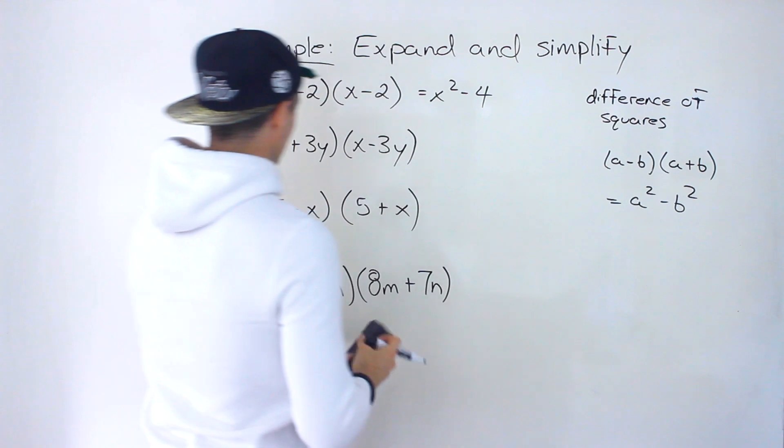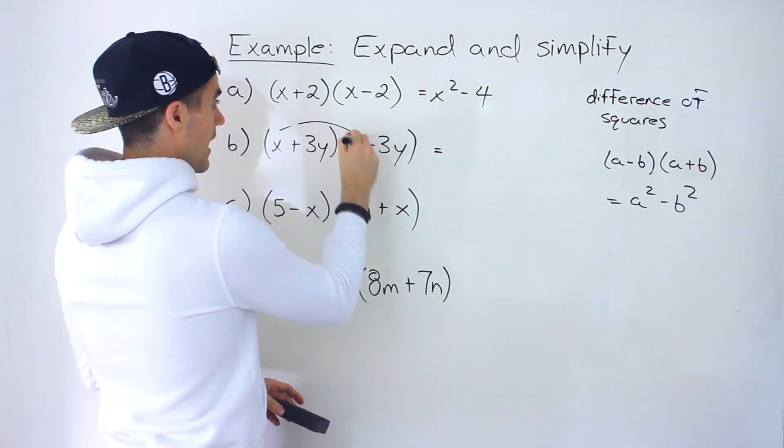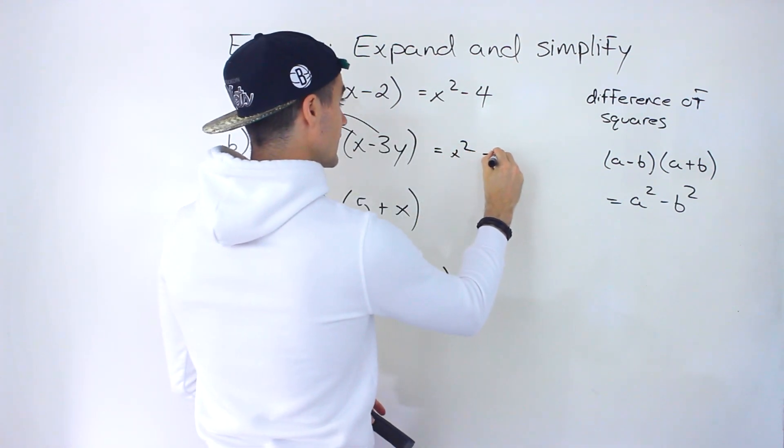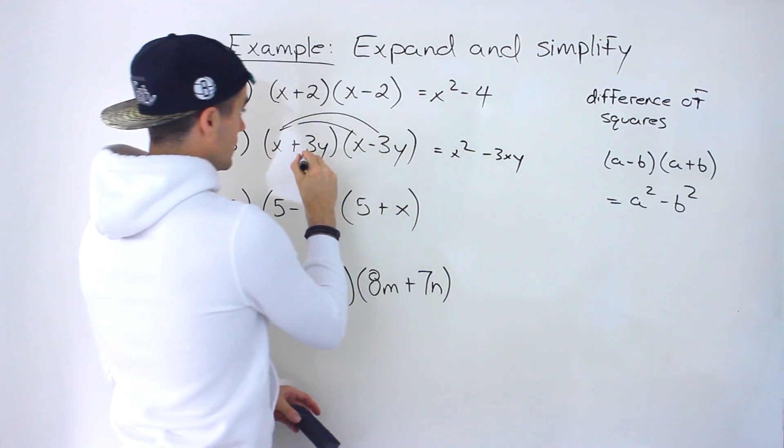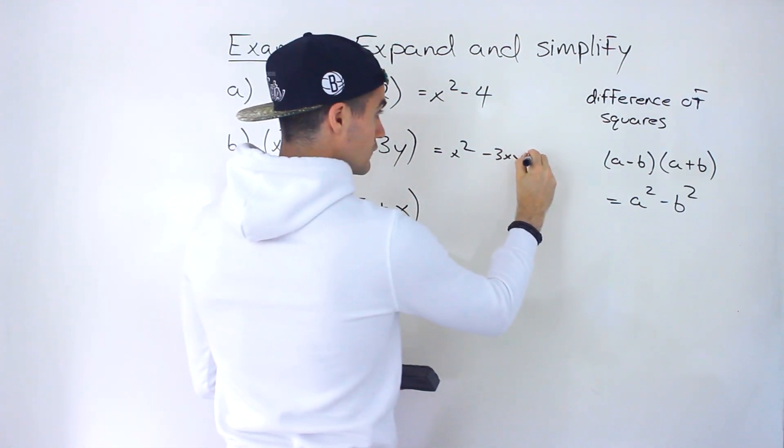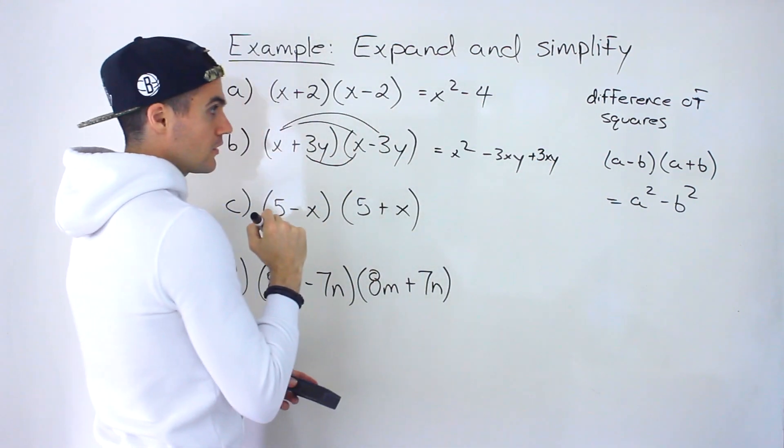So doing this one manually, you would have x times x, which is x squared, x times negative 3y, which is negative 3xy. Positive 3y times positive x would give us positive 3yx if you put it in alphabetical order, xy.